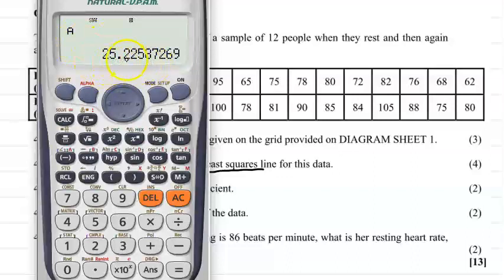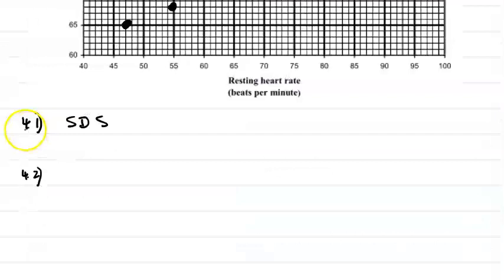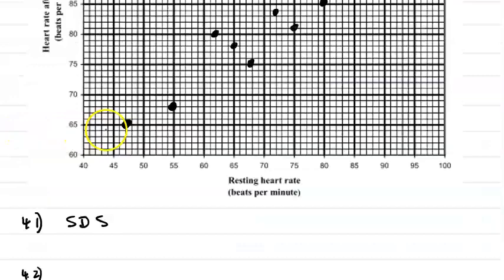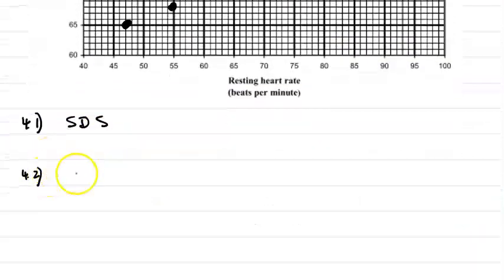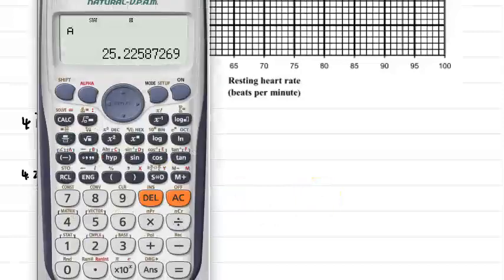Put down the question number and SDS diagram sheet because this is done on the diagram sheet. For the second example, the least squares regression line is as follows: y equals to a plus bx. So we want our a value first, so our a value as we've already calculated it is 25.23.